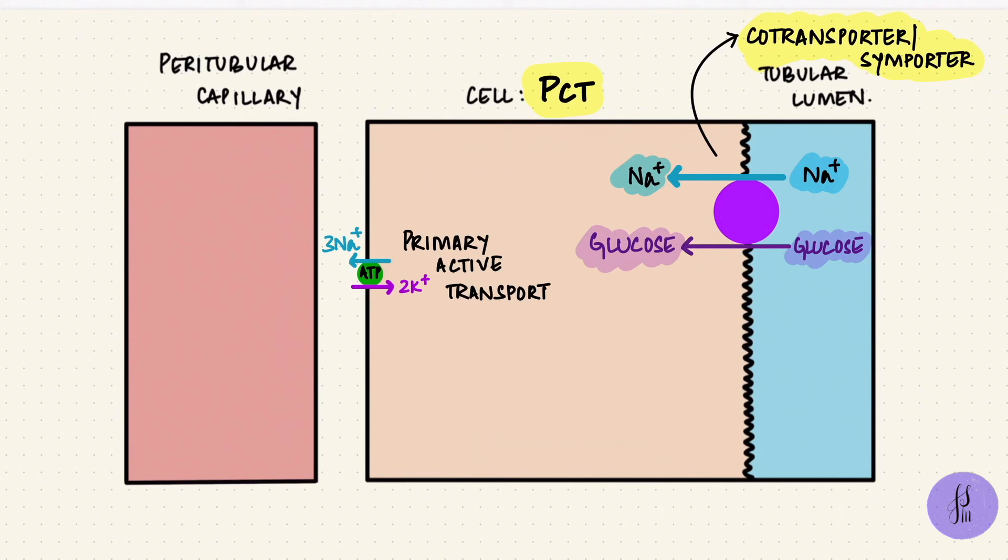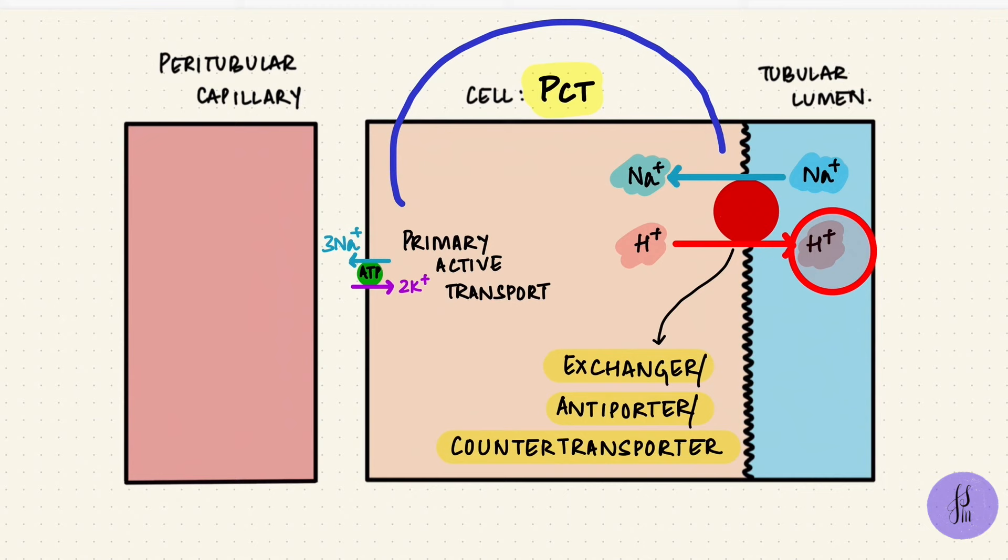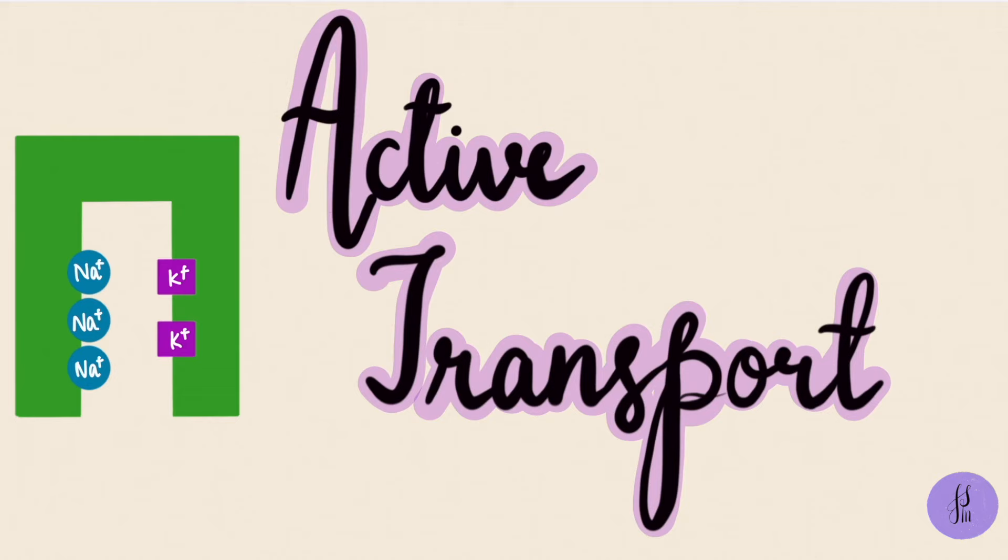And both co-transport and counter-transport remember that they didn't use ATP directly. The primary active transport used ATP and created a concentration gradient. The energy from that brought another solute against its gradient from low to high. So these are secondary active transport. And that is primary and secondary active transport.